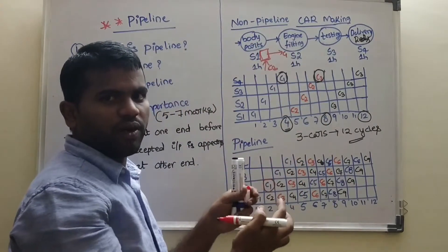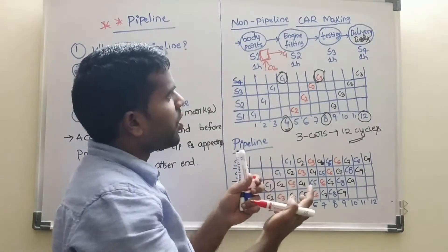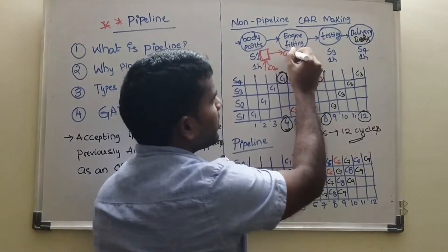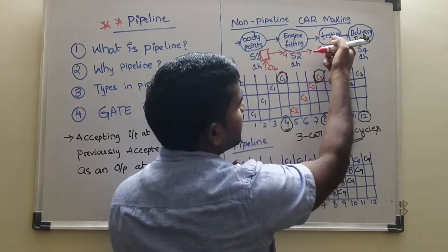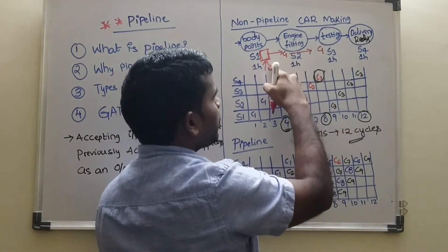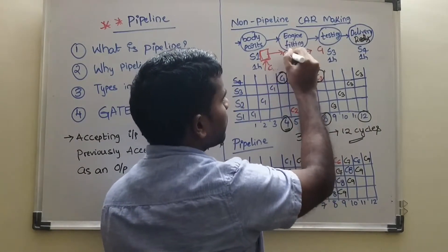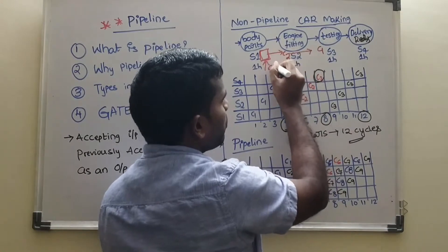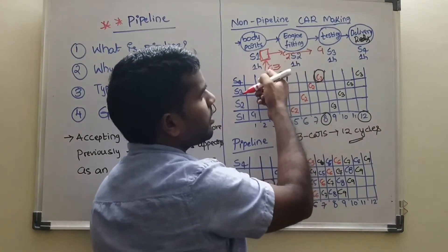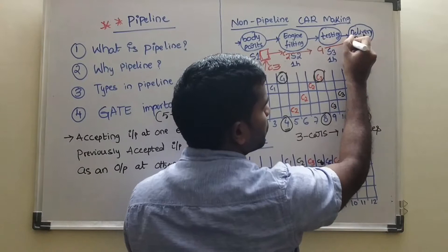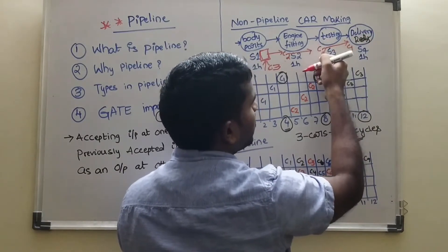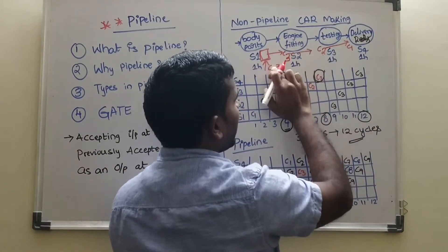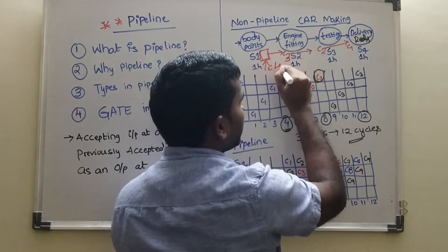Making all body parts together. Fitting all the bodies together. So whenever this C1 move to here. In testing stage, C2 come to here. And we can include one more car here. Whenever C1 moves to here. We can send car 2 here. And car 3 here. And we can include one more car here.